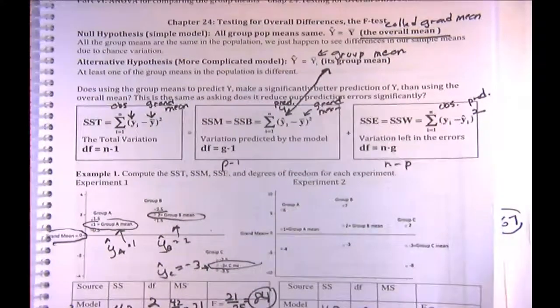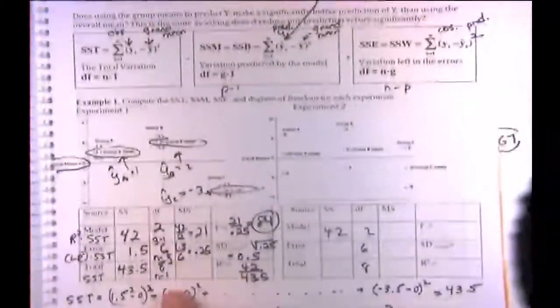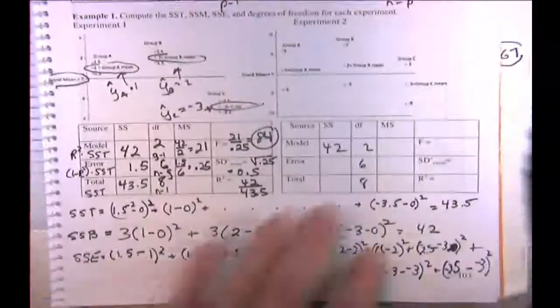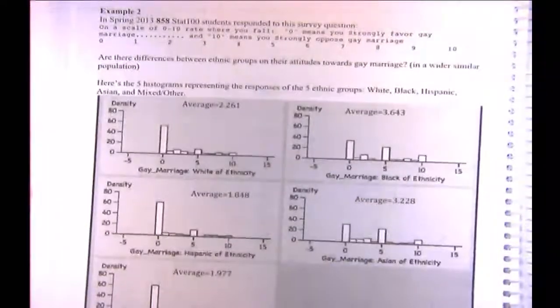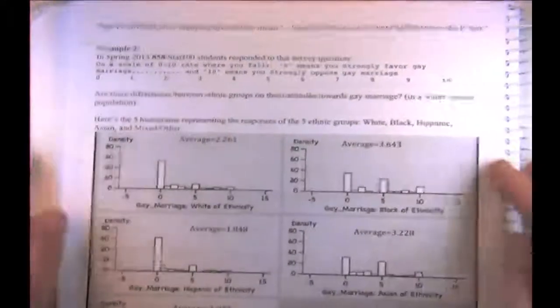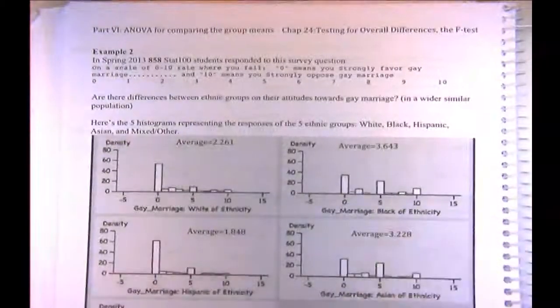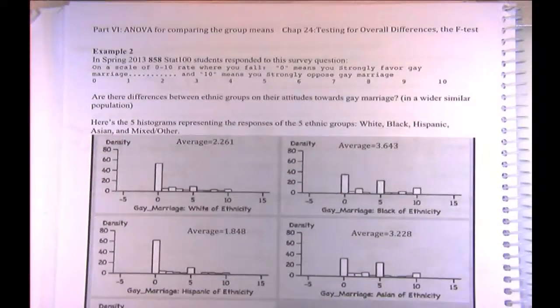We left off after completing this ANOVA table from scratch using a small data set of nine data points. Now we're going to examine a much bigger data set and use the R-squared method to compute an F and a chi-square statistic — not from scratch, but given R-squared.